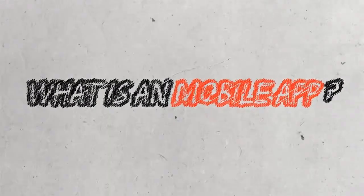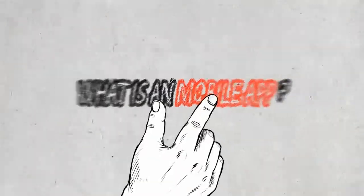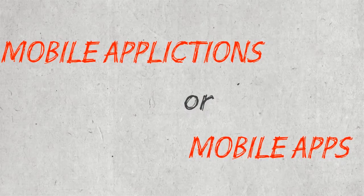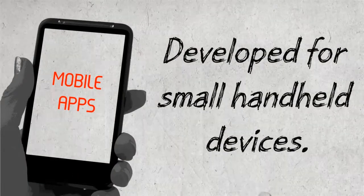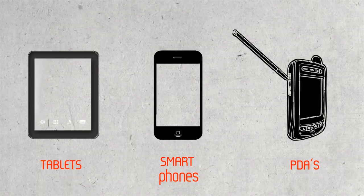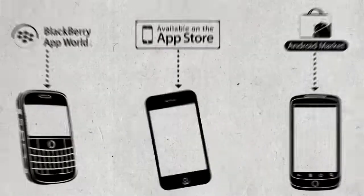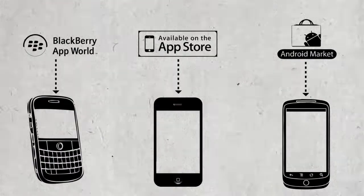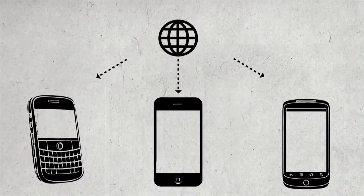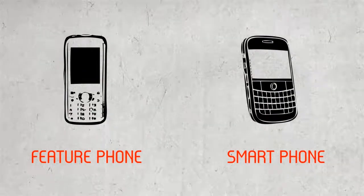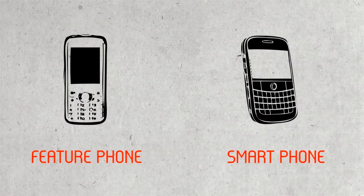What is a mobile app? Mobile applications, or mobile apps, are applications developed for small handheld devices — smartphones, PDAs, and tablets. Mobile apps can come preloaded on the handheld device, as well as can be downloaded by users from app stores or the internet. You can find mobile apps on both feature phones and smartphones.